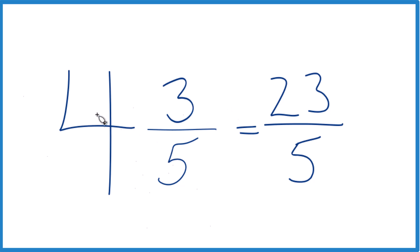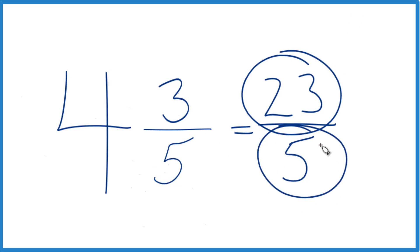Let's do it again. 4 times 5 is 20. 20 plus 3, that's 23. That's the numerator. Bring the denominator across, you got it.